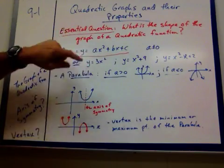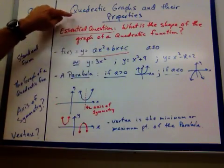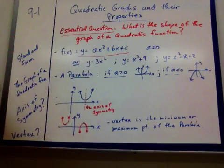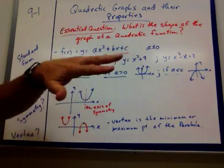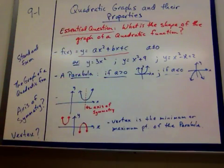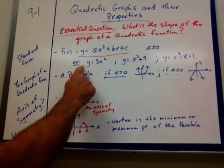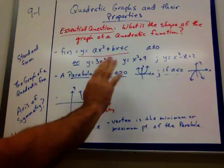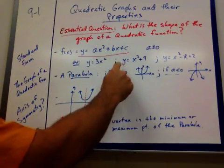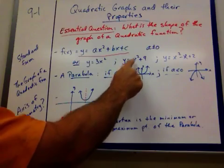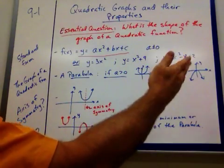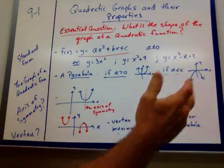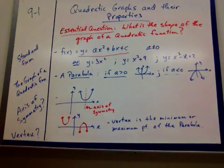Just like when it's x to the first it's linear, when x squared is the biggest one, it's quadratic. b and c can be 0, that's fine, but a cannot. Examples would be like y equals 3x squared — b and c are 0, that's why you don't have anything else. Or you could have y equals x squared plus 9, or y equals x squared minus x plus 2. Those are all different kinds of examples.